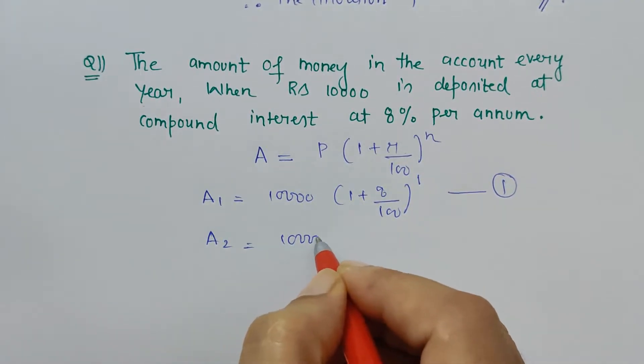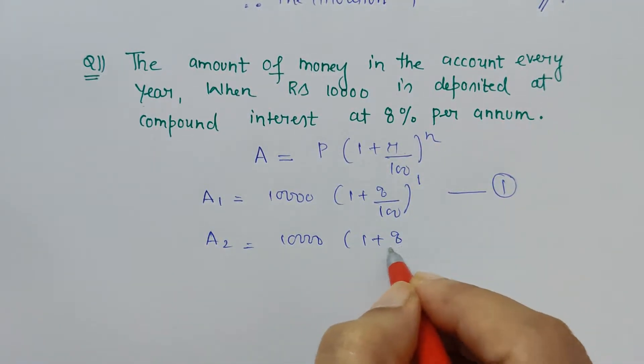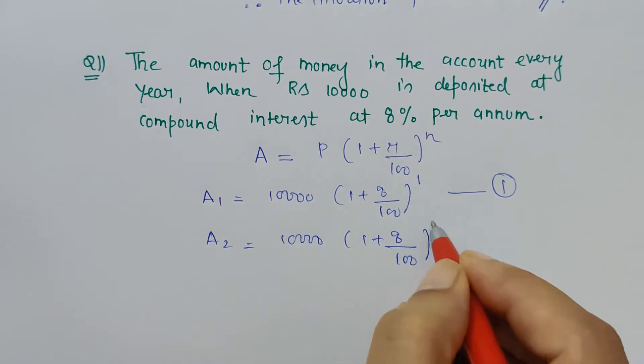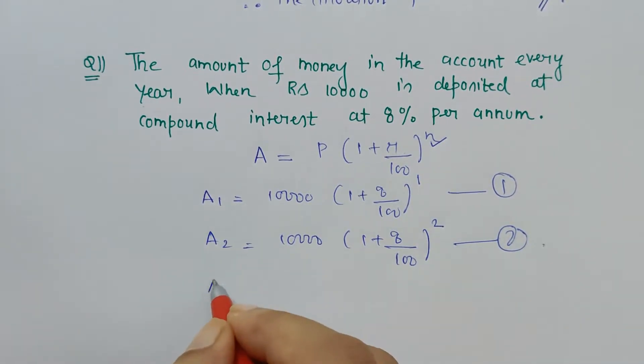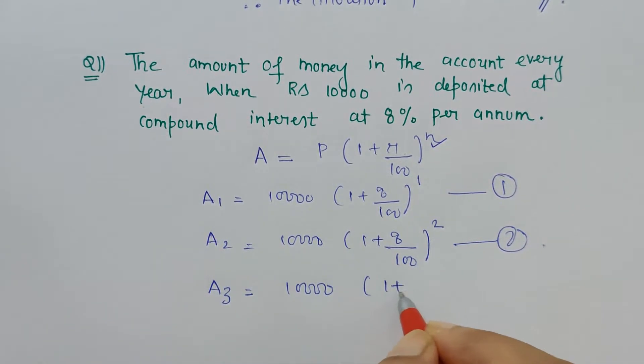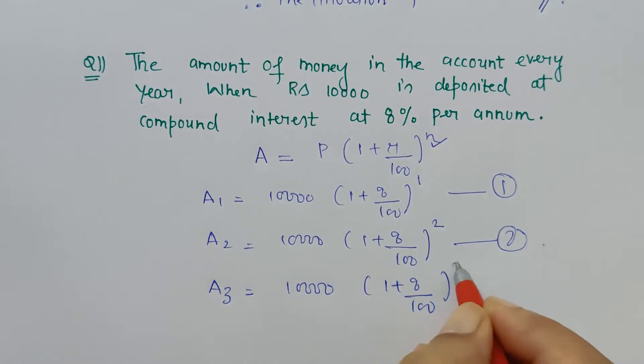Second year case: 10,000(1 + 8/100)^2, because now my year is 2, second year. Okay?